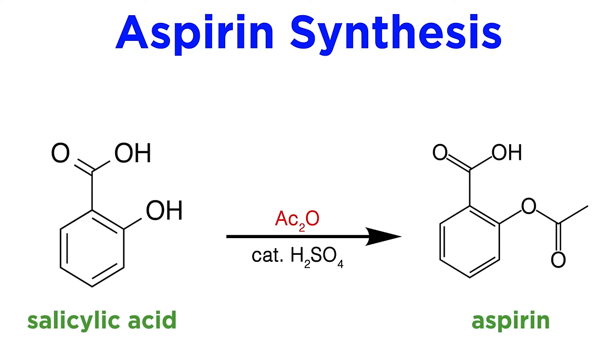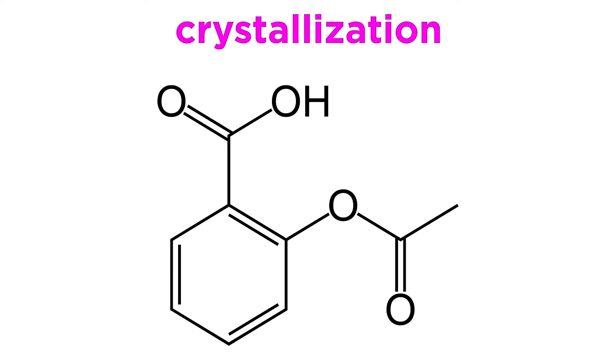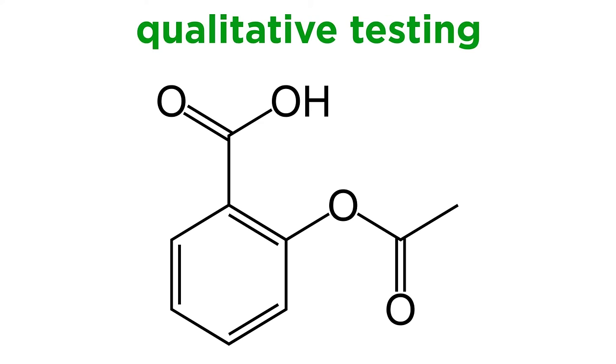We'll add the anhydride to salicylic acid, use a strong acid as a catalyst, and heat the reaction to completion. We'll then perform crystallization steps to isolate and purify our aspirin. To finish, we'll use a simple qualitative test to see whether or not we have made and purified aspirin.